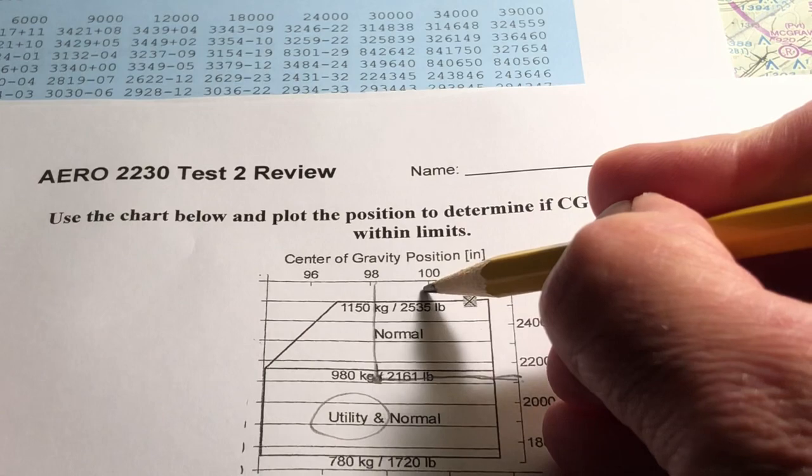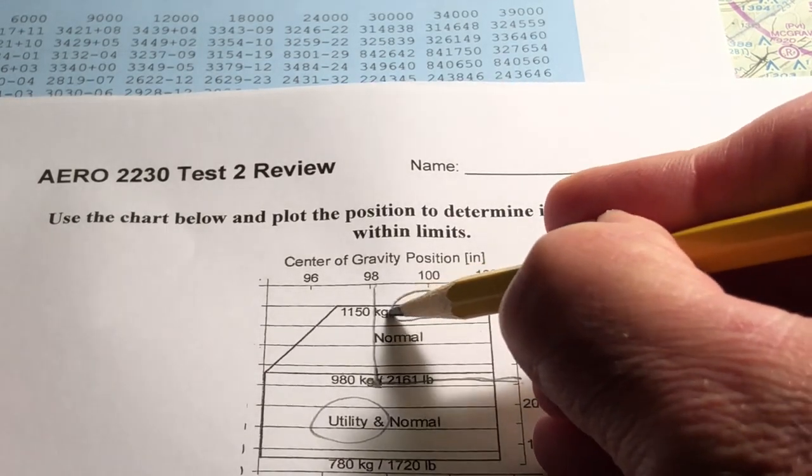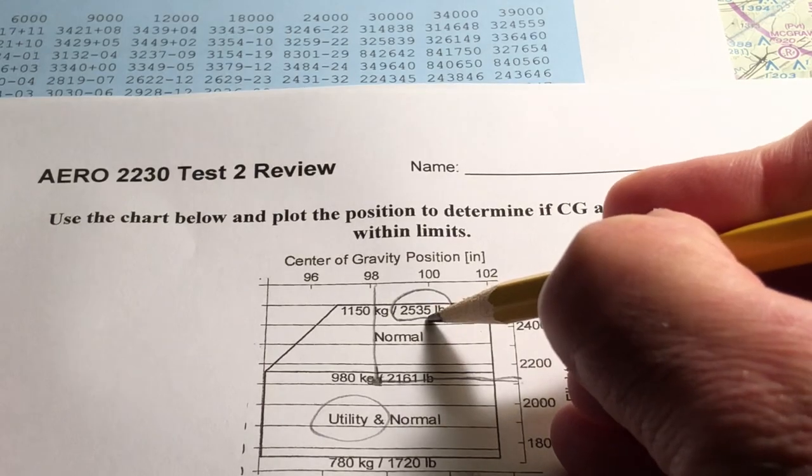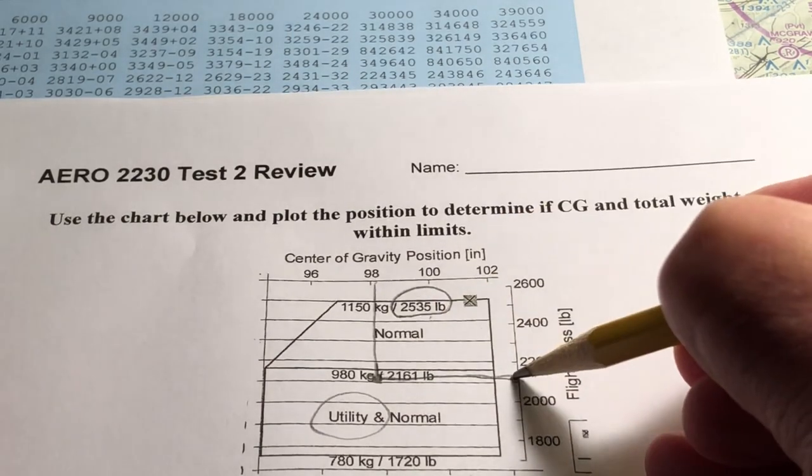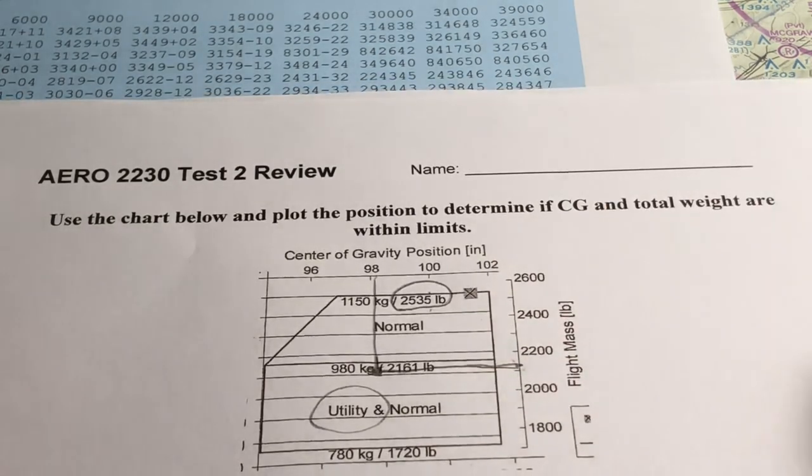And the maximum weight you can see here at the top of the envelope, top of the graph, is 2,535 pounds. Our airplane weighed 2,115 pounds, so it's well below the maximum gross weight.